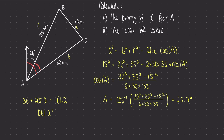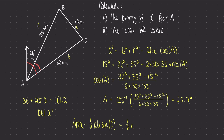The area of triangle ABC is very simple to work out now that we have found angle A. Using this angle I have a side, an angle, and another side — all three variables known — so I can use the area rule. Substituting in the variables, remembering that the two side lengths either side of the angle are referred to as A and B in the equation: the two side lengths are 35 and 30, and the angle in between is capital A, which we already worked out as 25.2 degrees. Placing this into the calculator gives 223.5 kilometres squared.